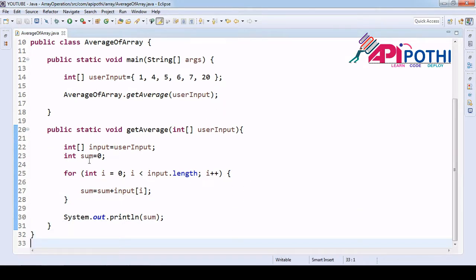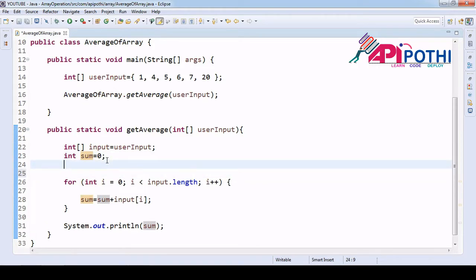We are storing into this sum variable. Now let's create another variable called average. Average is probably sometimes float, sometimes double. It will be 0.0, so I'm taking it as double. Average equals zero.